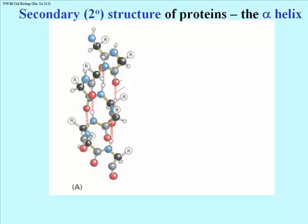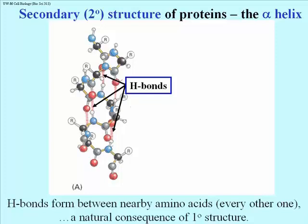So here on the left we have a ball and stick model of a polypeptide, which has formed an alpha helical structure because of the ability of oxygens on carboxyl groups to form hydrogen bonds with nitrogens on amino acids nearby. The H bonds actually form between every other amino acid in a polypeptide, and this is a natural consequence of the primary structure—the actual amino acid sequence.